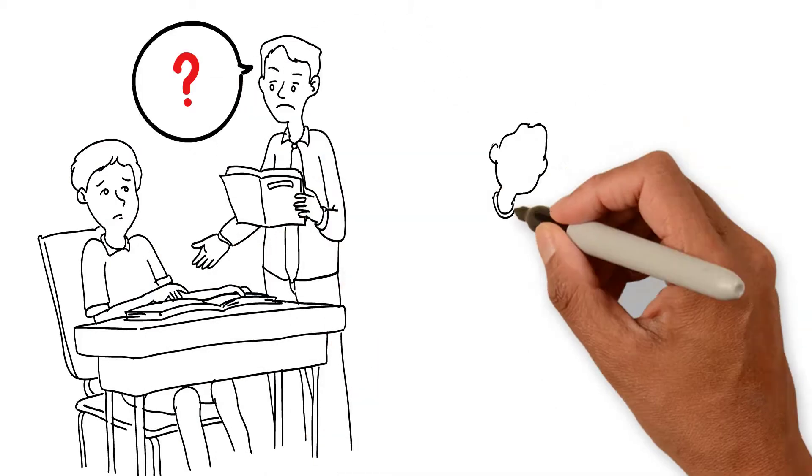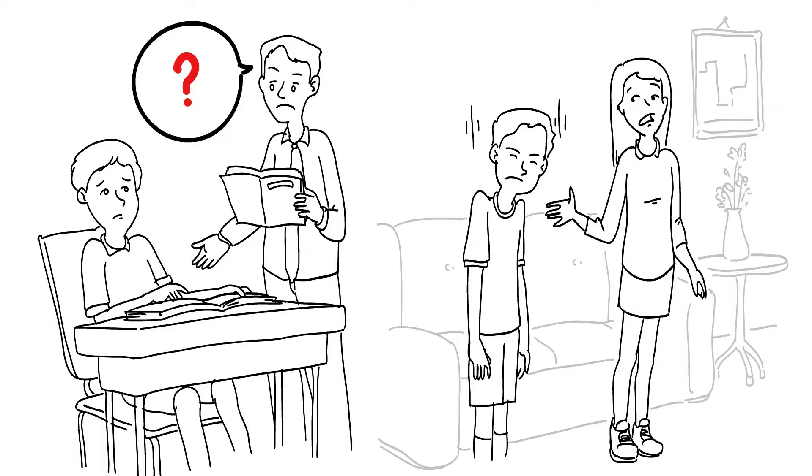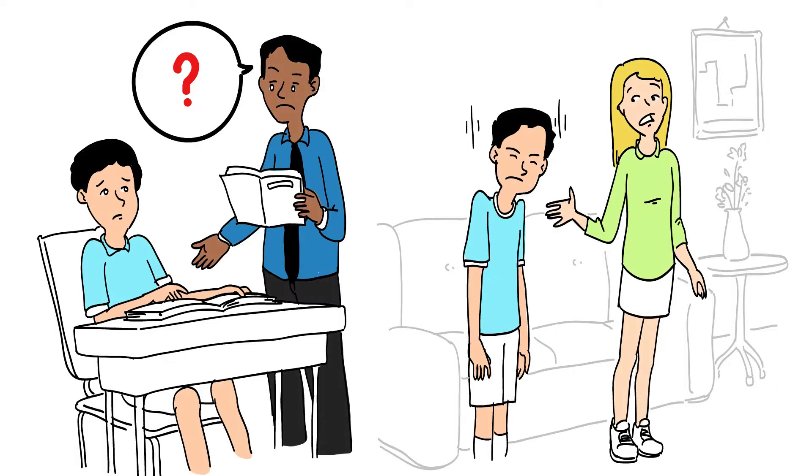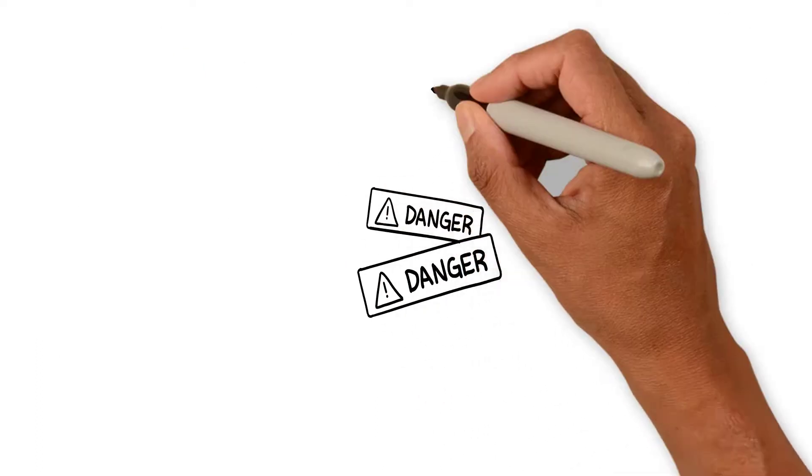But it's a problem when you are, say, in a classroom, or at home with your brothers and sisters, and maybe someone says something that upsets you, or they criticize you, or ask why your homework isn't handed in. And whoosh! Your brain goes, danger, danger, and sends out the warning.